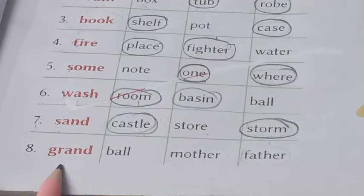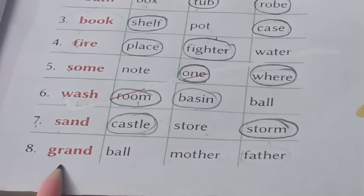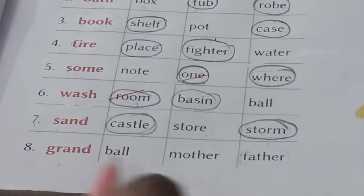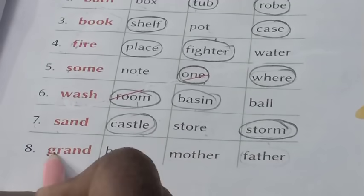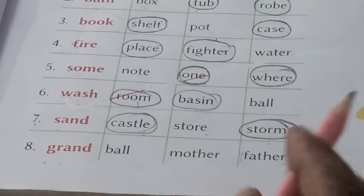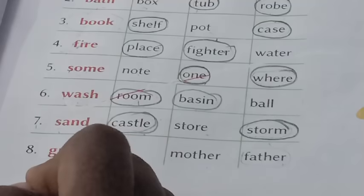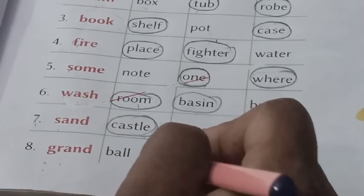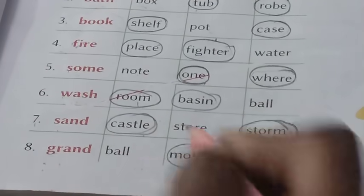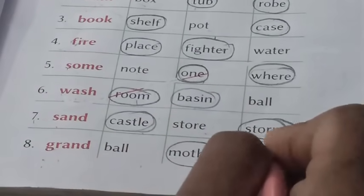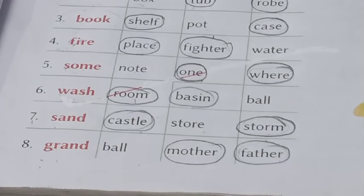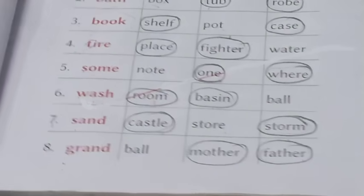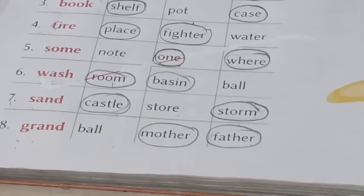Number eight: grand. When grand is combined with mother it makes grandmother, and when combined with father it makes grandfather. So this is one exercise done.